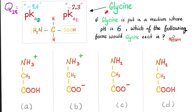Next: here is glycine, with PKA1 for one end and PKA2 for the other end. If glycine is to be put in a medium whose pH is 6, which of the following forms would glycine exist in? Is it A, B, C, or D? Please pause.